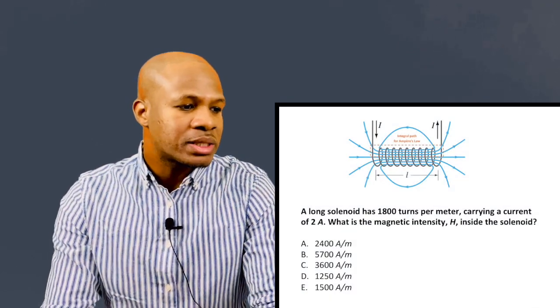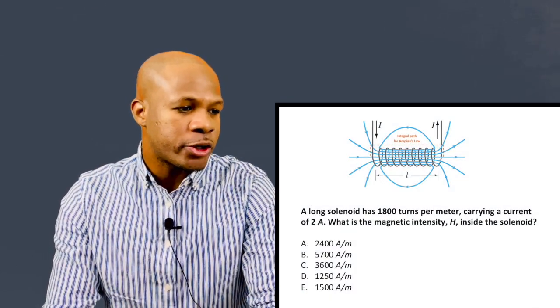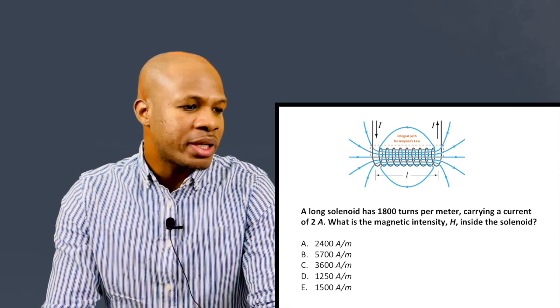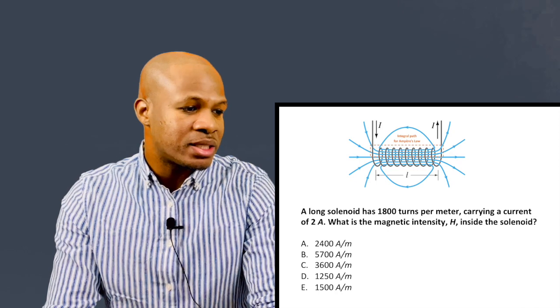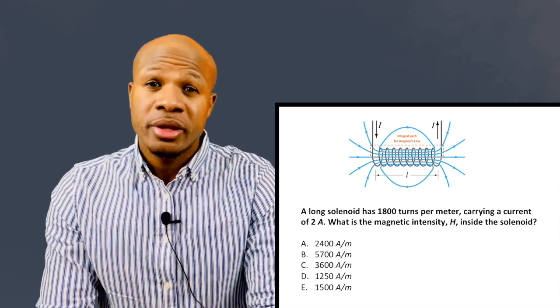Question number one states, a long solenoid has 1800 turns per meter carrying a current of two amps. What is the magnetic intensity H inside the solenoid?